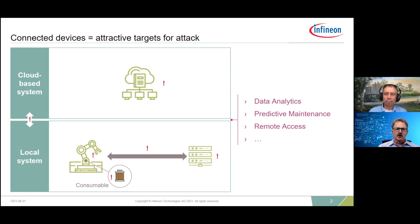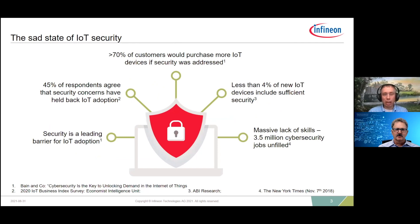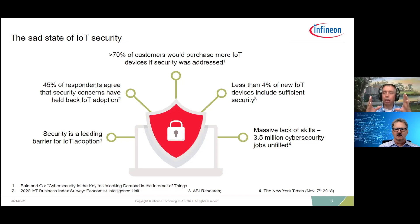Security has been a real problem for IoT. In fact, it's a leading barrier to IoT adoption. People aren't sure devices are quite secure yet, and one of the reasons is all the headlines about IoT security breaches — whether it be Stuxnet, Mirai, or others. It seems there is a new IoT security breach every week, and independent evaluations consistently find IoT devices lacking in adequate security.